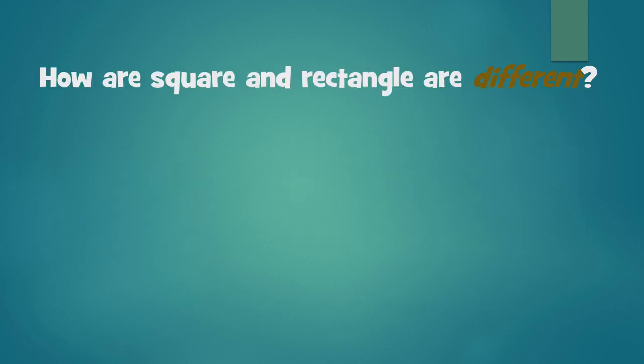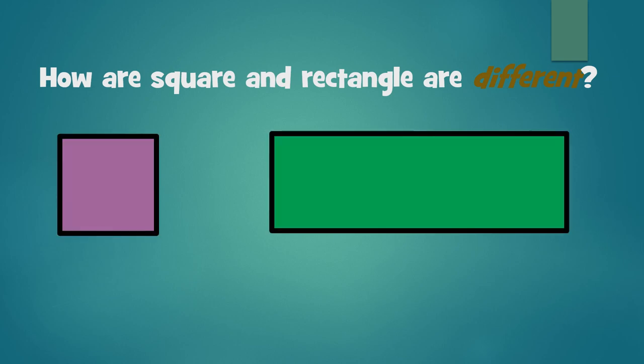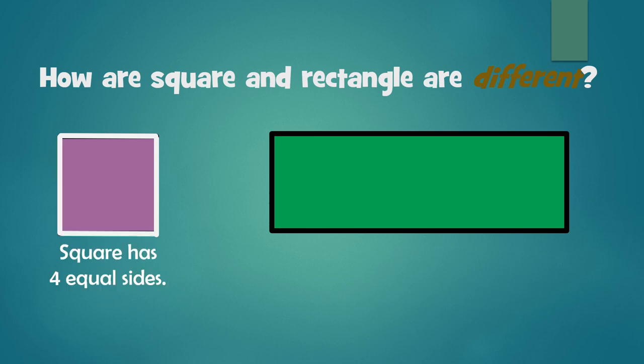How a square and a rectangle are different. Again, there's a square on the left side and a rectangle on the right side. A square has one, two, three, four sides. So, it has four equal sides.